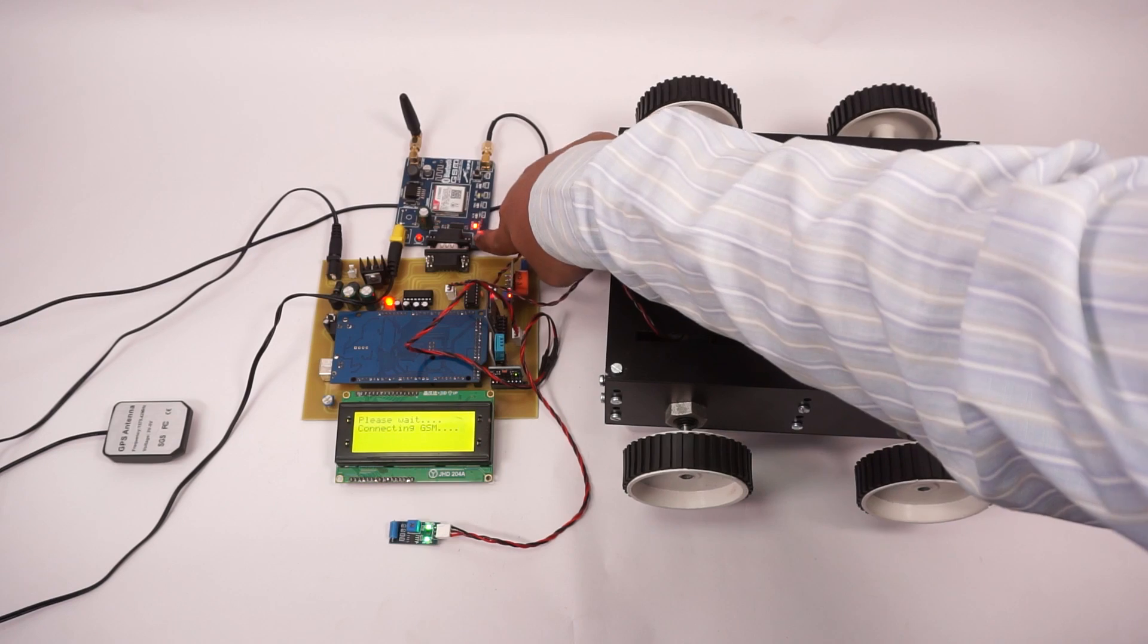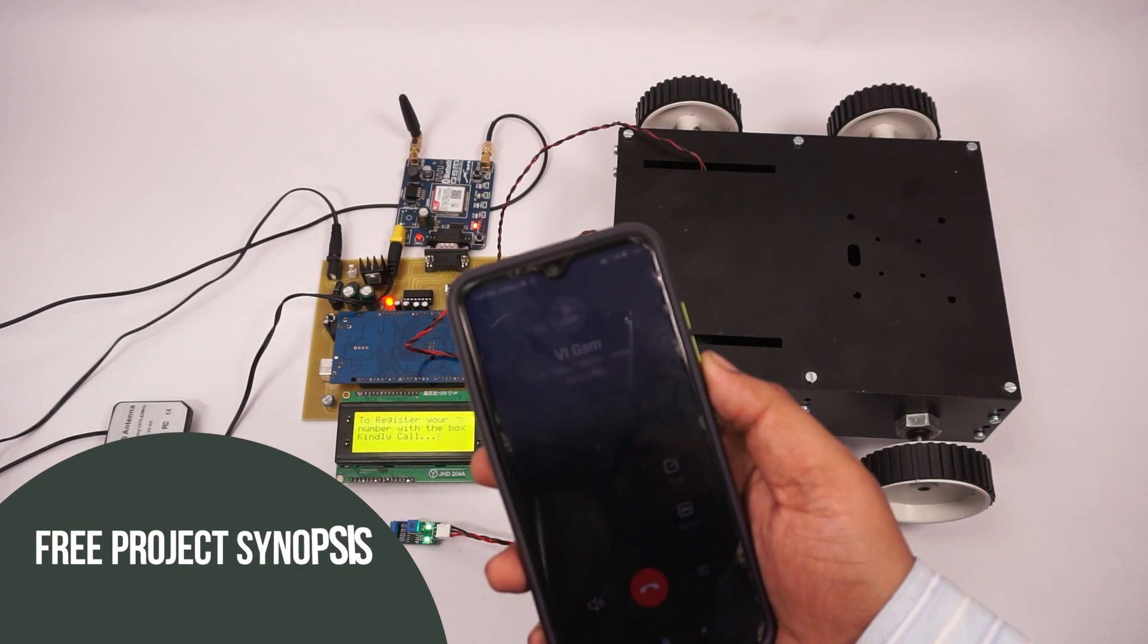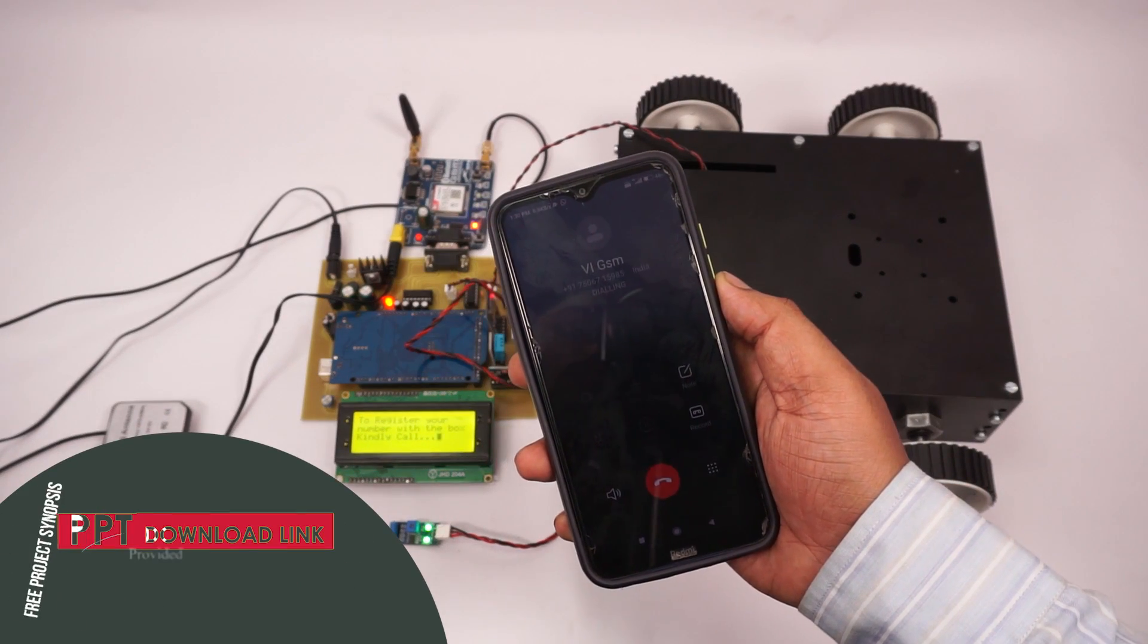Now let's turn on the GSM modem so that we can configure our number. We just need to give a missed call on the number on the SIM card that we have inserted in this GSM modem.